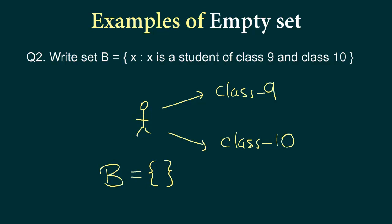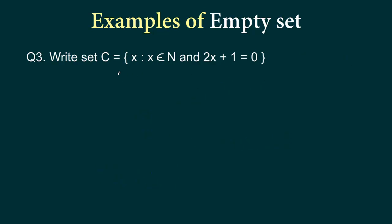Let's take a look at one final example before we wrap up this video. So here we want to write set C where it contains x where x belongs to natural number and 2x plus 1 equals 0. So how are we going to solve this? So when the first part x belongs to natural number, we know what are natural numbers.